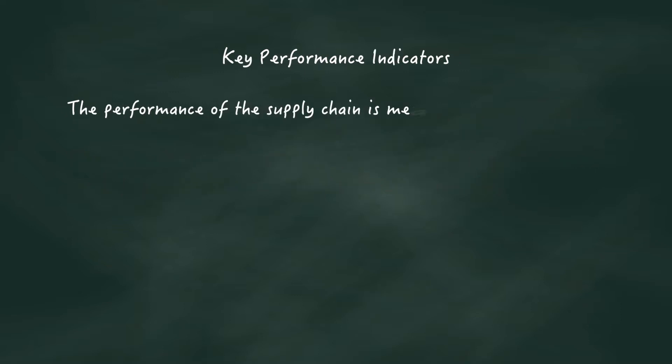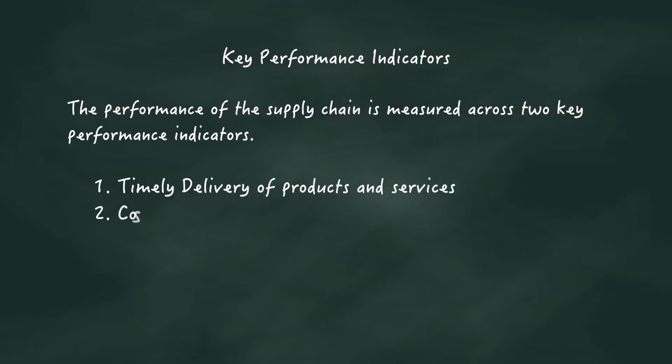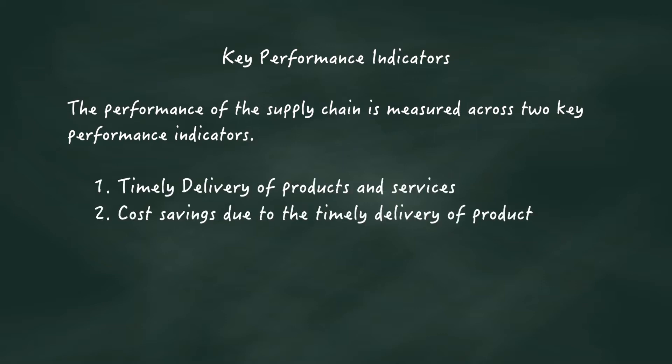In contemporary supply chain management, the performance of supply chain is measured across two key performance indicators: timely delivery of products and services, and cost savings due to timely delivery of products and services.